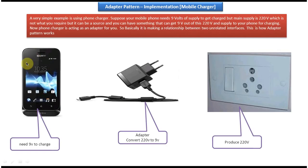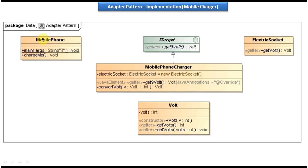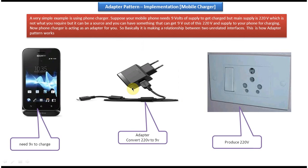On the left side we have the mobile phone and it needs 9 volts to charge. Corresponding to this mobile phone I created a MobilePhone class, and it has a main method and a chargeMe method. In between we have the adapter, which is nothing but a mobile charger. This mobile charger will convert 220 volts to 9 volts and give 9 volts to the mobile phone.